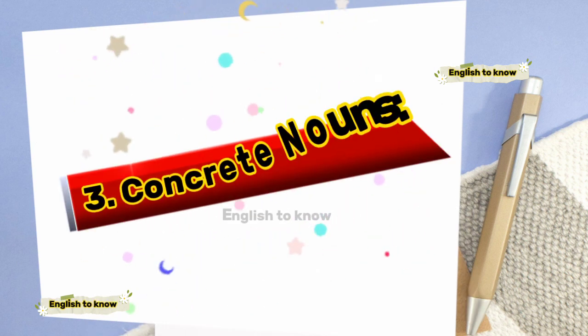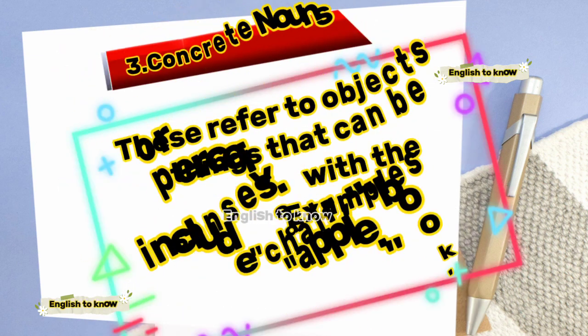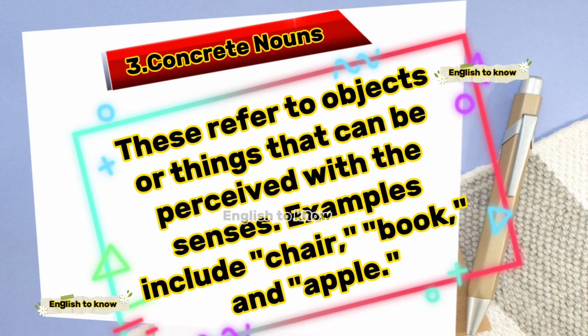Concrete nouns refer to objects or things that can be perceived with the senses. Examples include chair, book and apple.